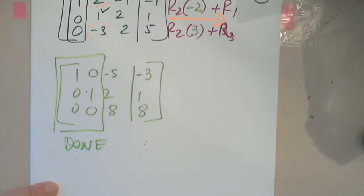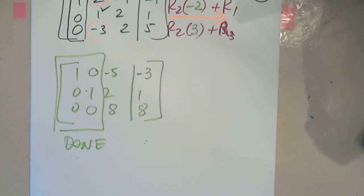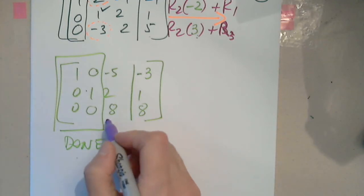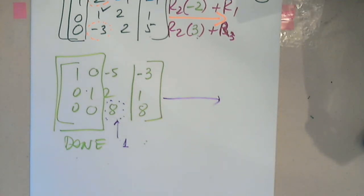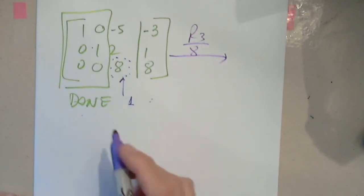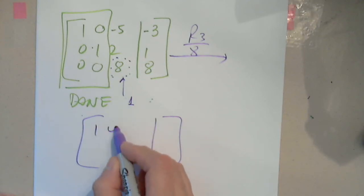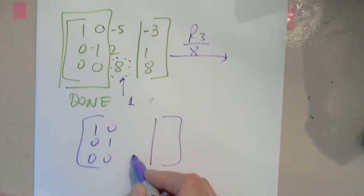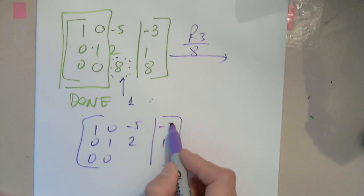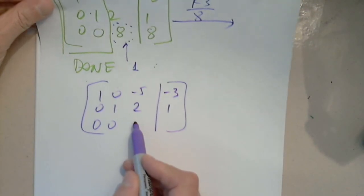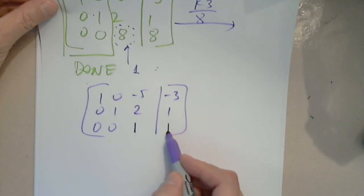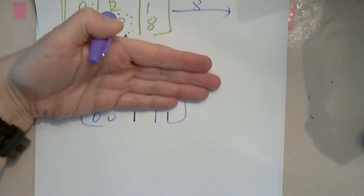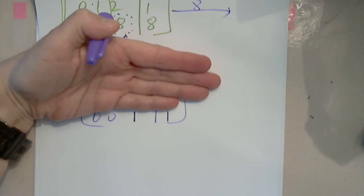Where are we now? Eight — that's it. This has to become a 1. How do we make that be a 1? Divided by 8. Eight divided by 8, eight divided by 8. Can anyone give us z already? One.